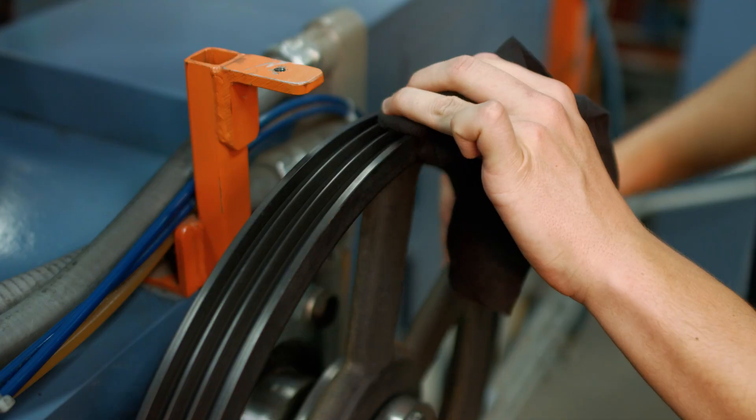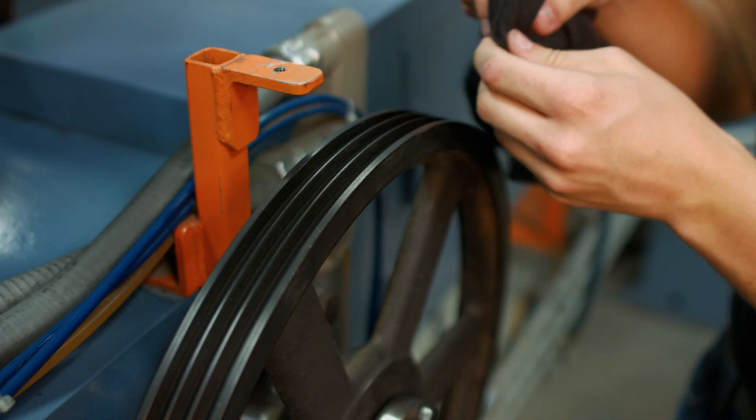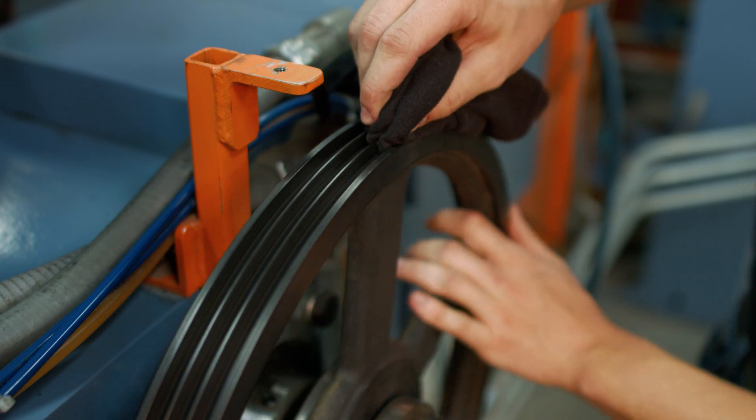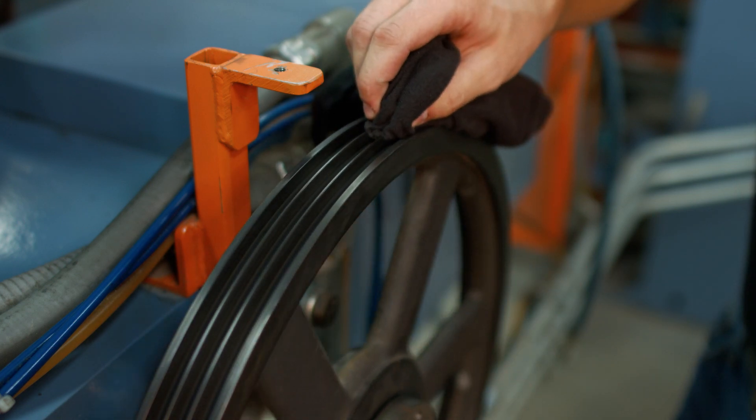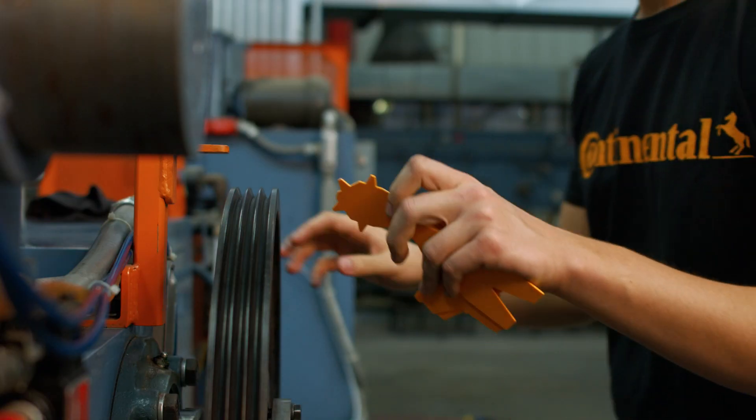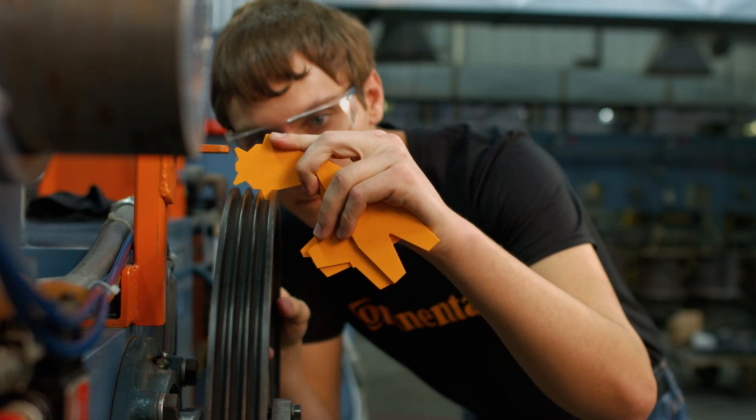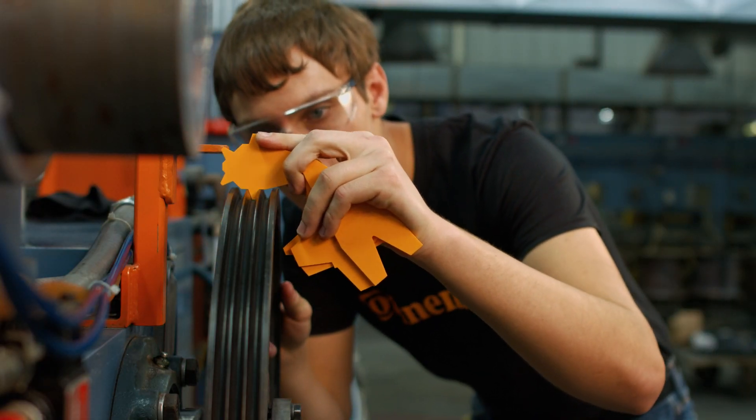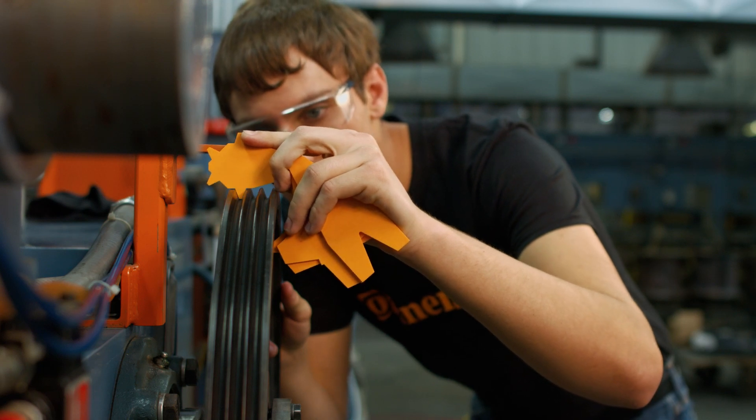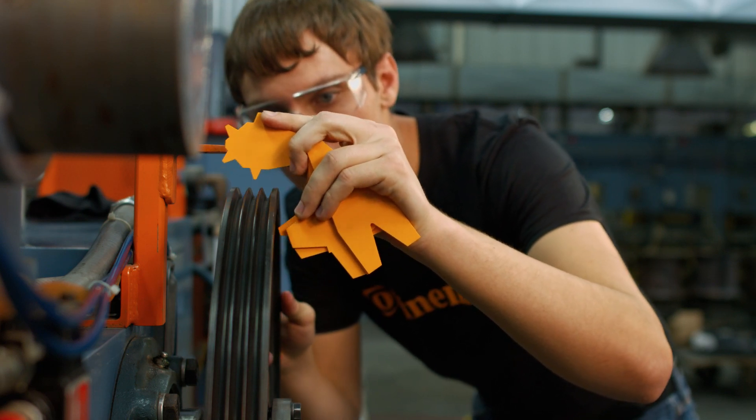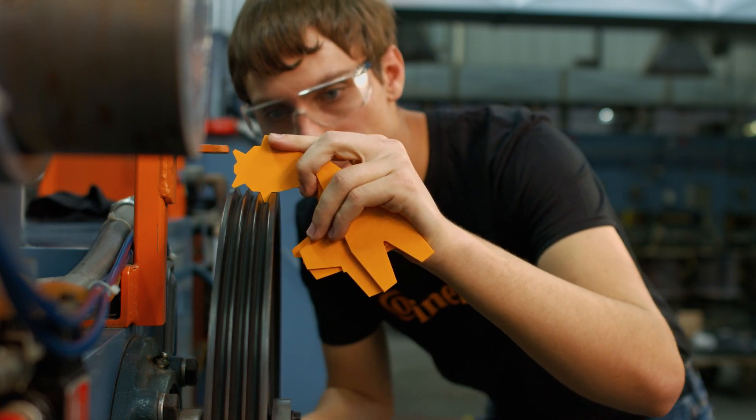To begin, inspect the shivs. Use a stiff brush to remove rust and dirt and a soft cloth to wipe off oil and grease. Insert the gauge in the groove and look for voids that indicate dishing or other uneven and abnormal wear. Worn shivs are a leading cause of premature belt failure.